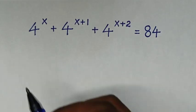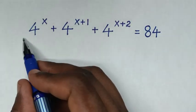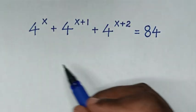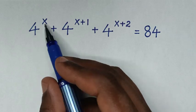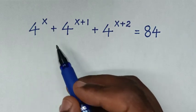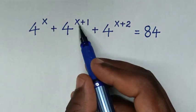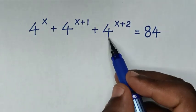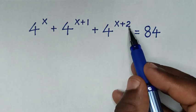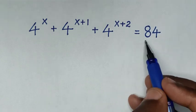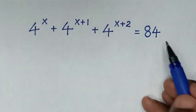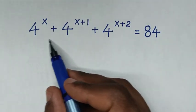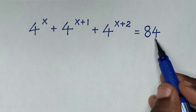Hello, you are welcome to solve this math problem which is 4 power x plus 4 power x plus 1 plus 4 power x plus 2 is equal to 84, to find the value of x from this equation.